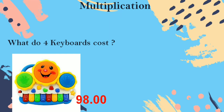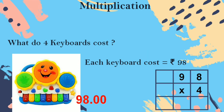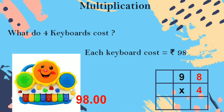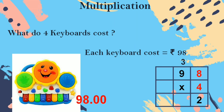Then move on to the next example. What do 4 keyboards cost? Each keyboard cost: a single keyboard costs rupees 98. If each keyboard cost is given, you are going to multiply and find out how much 4 keyboards cost. 4 eights are — say, children — 32. You put 2 down, 3 up.